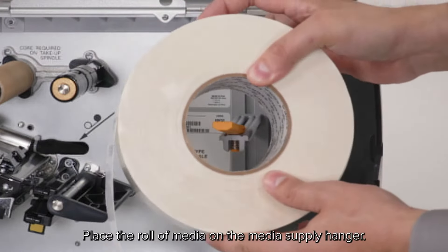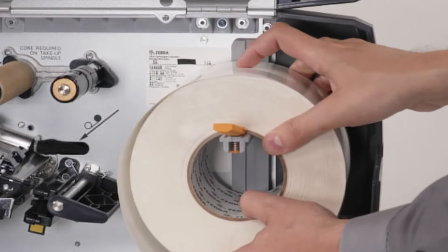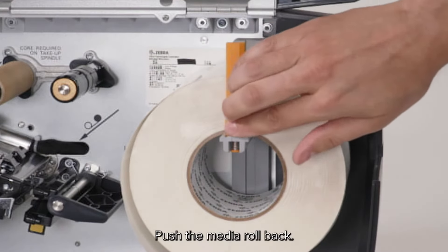Place a roll of media on the media supply hanger. Push the media roll back.